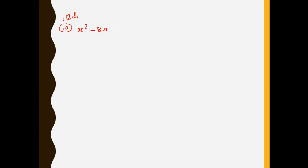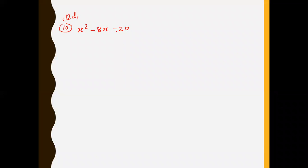You're given question number 10, exercise 12D. It says factorize x squared minus 8x minus 20. The first thing you do is look for factors which when you add them together give you negative 8, and when you multiply them give you 20. What did you use? You used four and five — no, four and five can never give you eight.